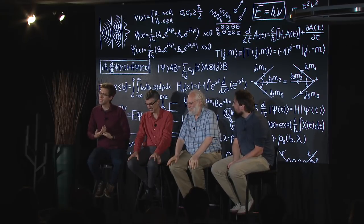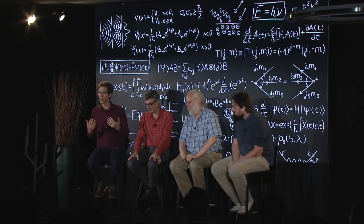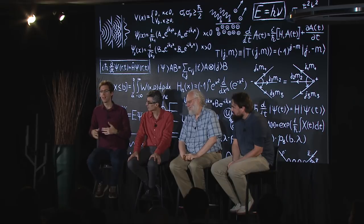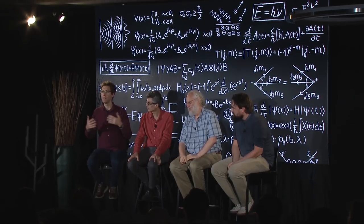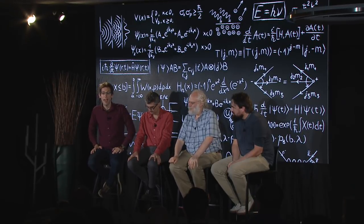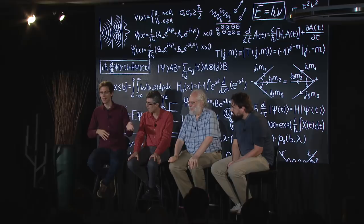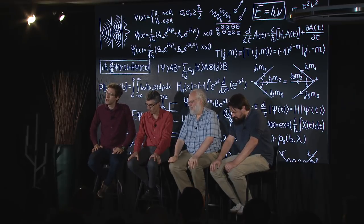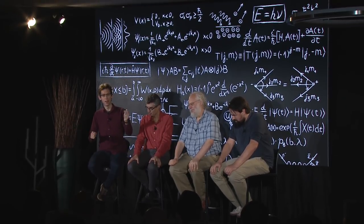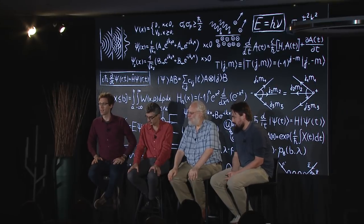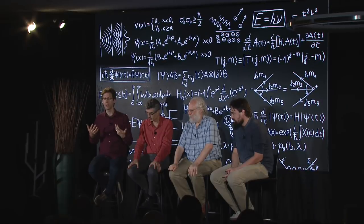I would not explain the power of quantum computing in terms of entanglement, although I think that's a necessary part. I would say quantum mechanics can be thought of as a generalization of probability theory. If you have a classical computer with n bits, that's got 2-to-the-n configurations. We know it's useful to randomize things on classical computers — both empirically and theoretically, there's a lot of evidence that randomness helps, and you've expanded the state space.